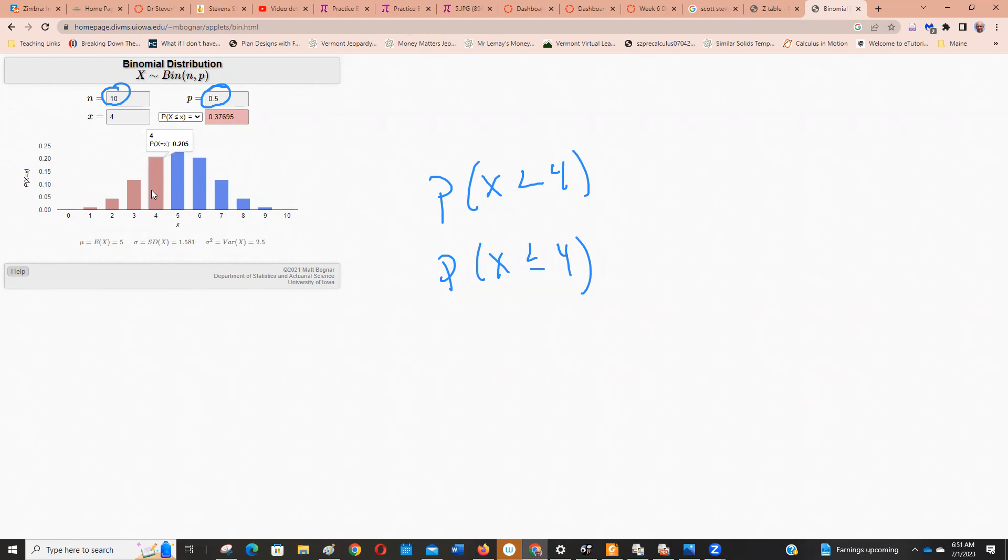And you see how the probability of getting exactly 4 is 0.2 and then 0.3. So if I wanted to find this probability here, that's exactly what this calculator is telling me right there. That's 0.37695. And then if I wanted to find this probability while using this calculator, I'd have to subtract 0.205 because that's not included. We don't want to include 4.